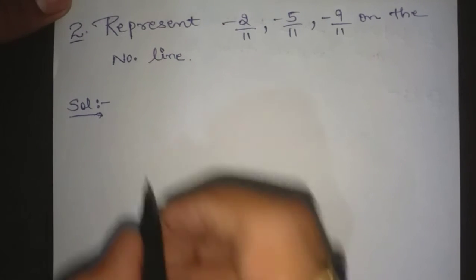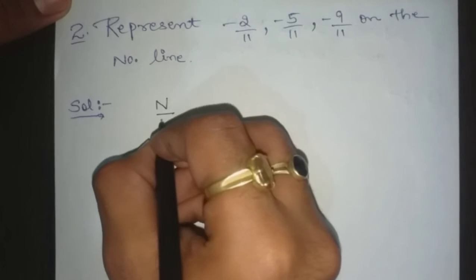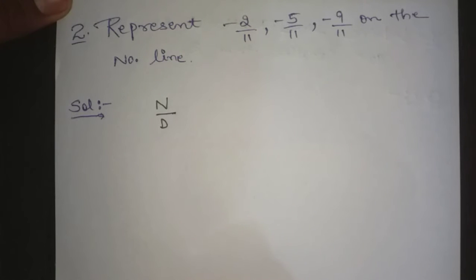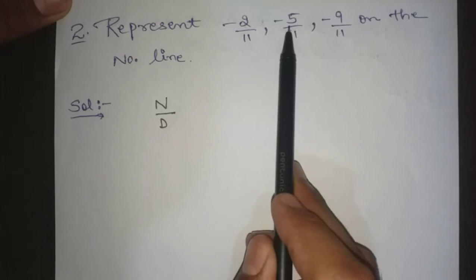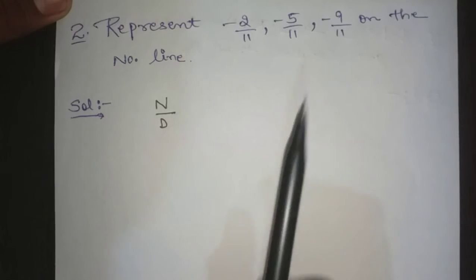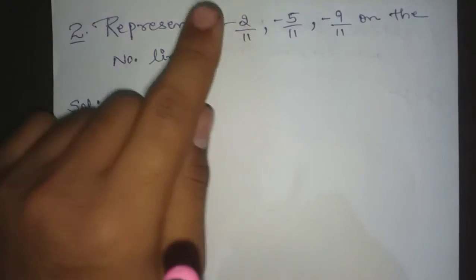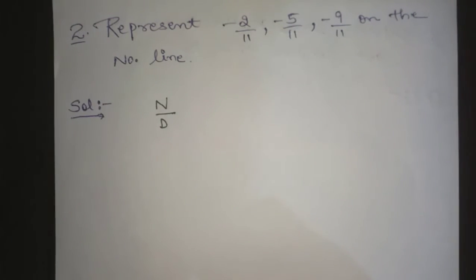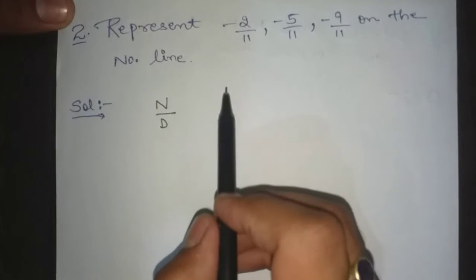First we have to see numerator and denominator. The denominator is equal but numerator is different. Now what do you want to look at? The denominator. You have to neglect the negative sign, then you need to see numerator or denominator.